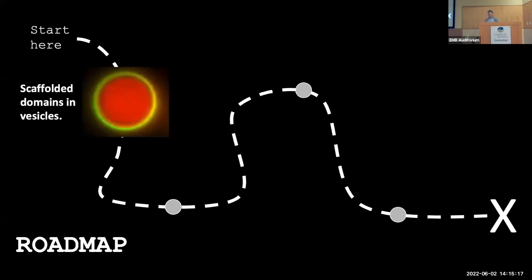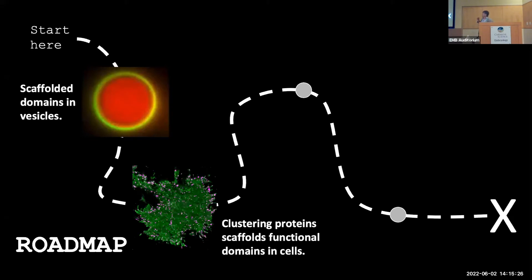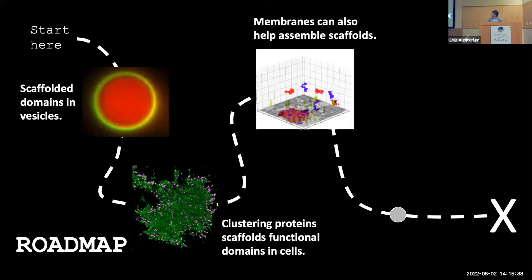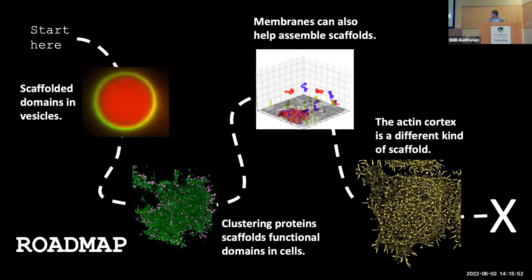Here's my roadmap. I'm going to start off talking about very simple model membranes and introduce the idea of a scaffolded domain. Hopefully I'll convince you that we see very similar types of structures in cells. We can then think about how these can be functional and design experiments to answer those questions. I'll tell a short story about how the cool phase separations we've already heard about today might interact with membrane phase separation to do even newer things. If time permits, I'll talk about actin and other ways things can be scaffolded to have different resulting functions.